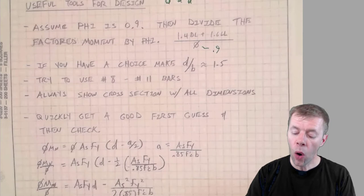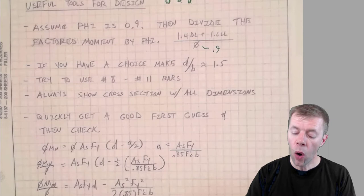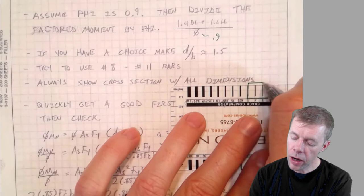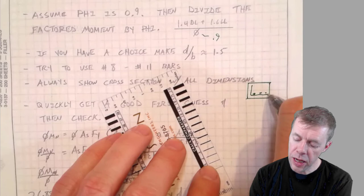Always show your cross sections. Always draw your cross sections with whatever dimensions you come up with. Draw your steel in, draw your stirrups in, draw your bars at the top.